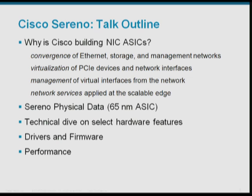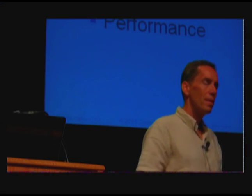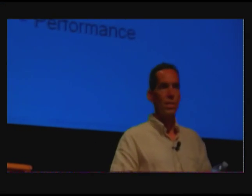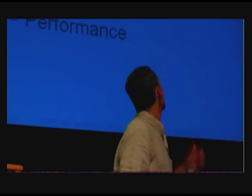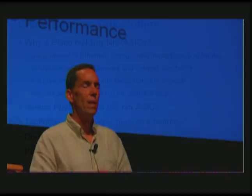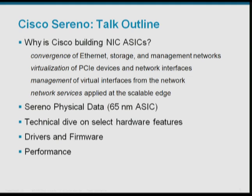A lot of you are probably wondering — why in the heck would Cisco build a NIC chip? We could buy NIC chips from Intel, Broadcom, QLogic, or Emulex, so why would we build our own? Well, we had the Unified Computing System architecture that we wanted to enable, and we really needed convergence, virtualization, management, and network services in a way we couldn't really get. The way we implemented those is unique, and it's also very important how they work together.